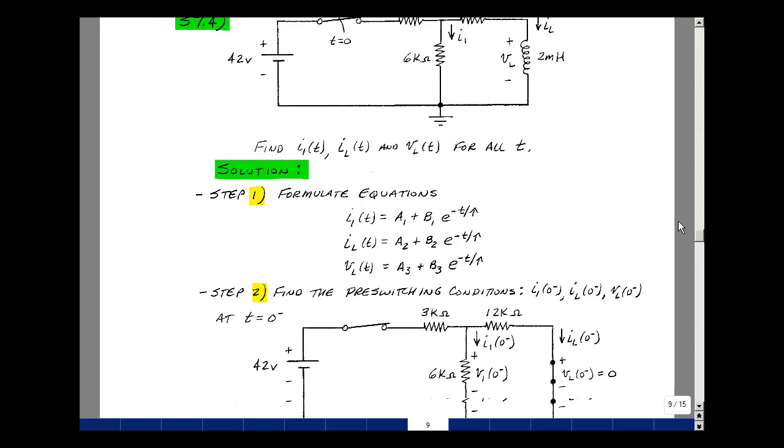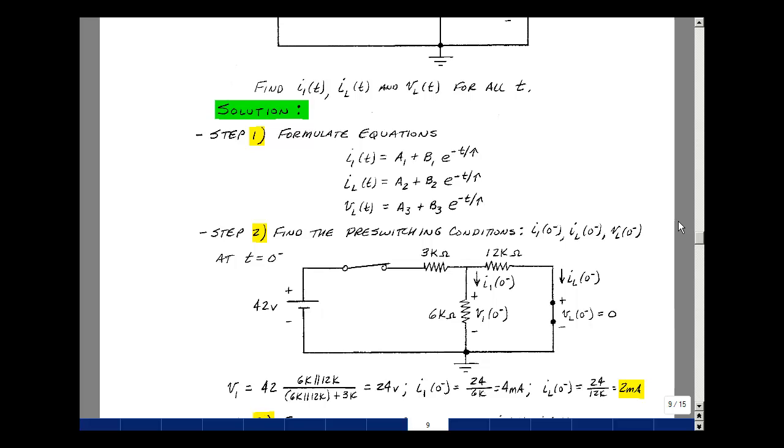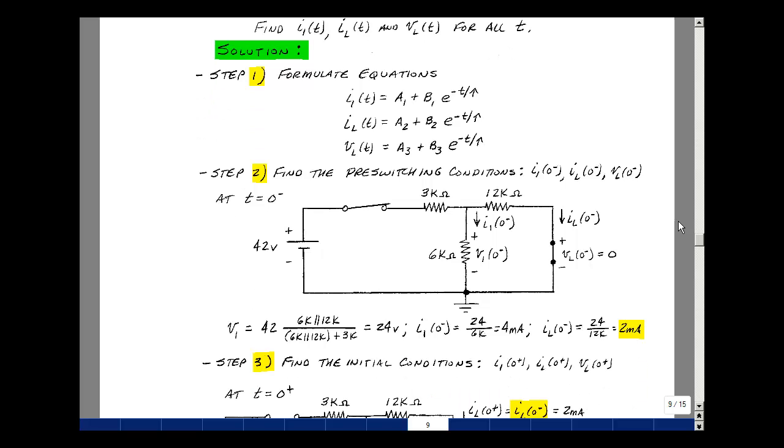Our second step was to find the pre-switching conditions of our unknowns. Let's assume that the circuit's been in this position for a long time. With the switch closed, we've reached steady state for the inductor, so it looks like a short circuit. Now we're going to solve for the current I1, I sub L, and V sub L.